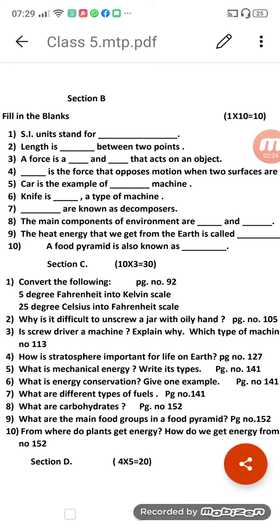Eighth, the main components of environment are - main components you have to write down: water and air. Ninth fill up: The heat energy that we get from the earth is called - the heat energy that we get from the earth is known as geothermal energy. And the last fill up: A food pyramid is also known as - what is the other name of food pyramid? That is known as diet pyramid, very good.